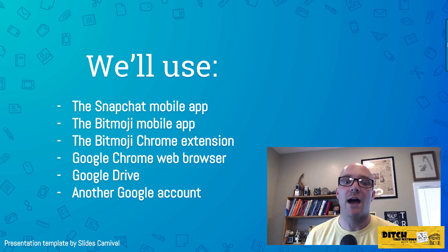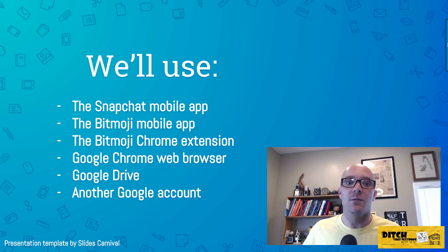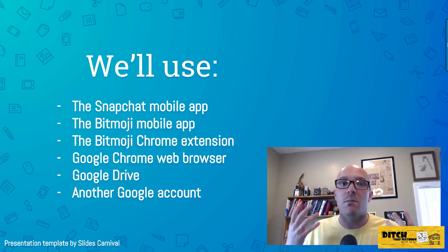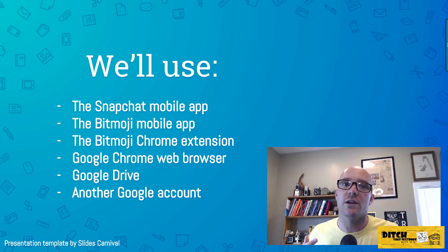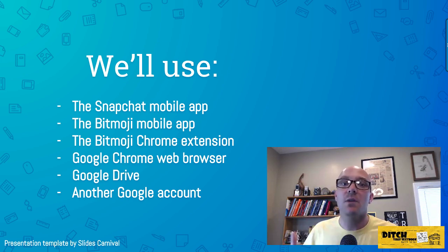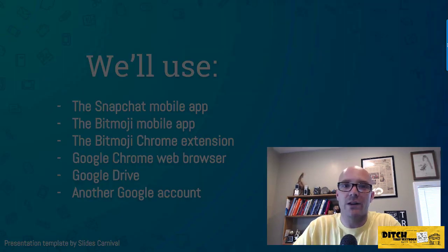The easiest way to do this is with a phone or tablet, since Snapchat is very mobile-dependent. There's not a ton you can do on a desktop or Chromebook. We'll also use the Bitmoji Chrome extension, so you'll want to use the Google Chrome browser. I'm going to be saving things into Google Drive — if you have Office 365, that would probably work fine too. I'll be using a separate Google account to create all of this.